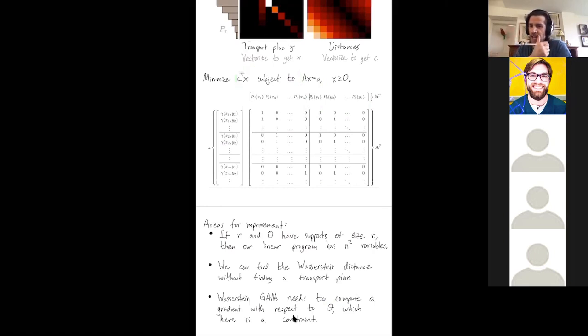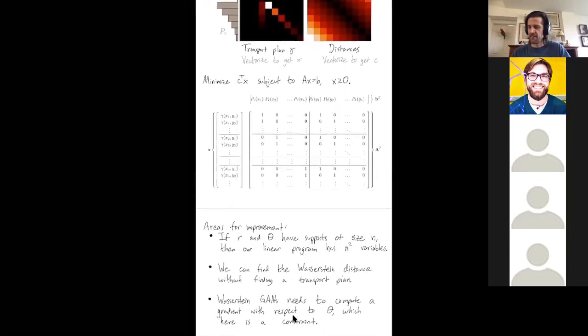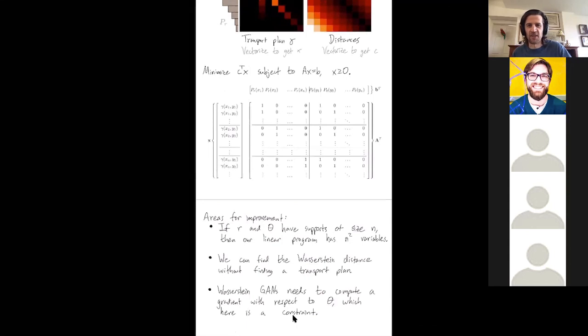So we're actually going to dualize it and we'll reduce the number of variables. We'll find the Wasserstein distance without computing the transport plan. And theta will get moved from the constraints to the optimization function, allowing us to take a gradient with respect to theta more easily. It's much easier to take a gradient with respect to the optimization function. Wonderful. Questions? Thanks so much.